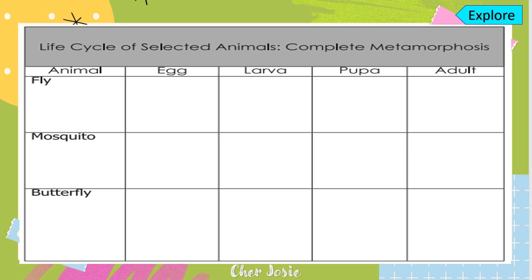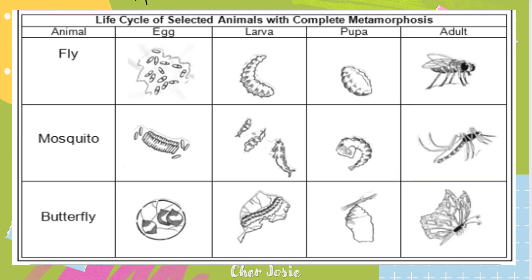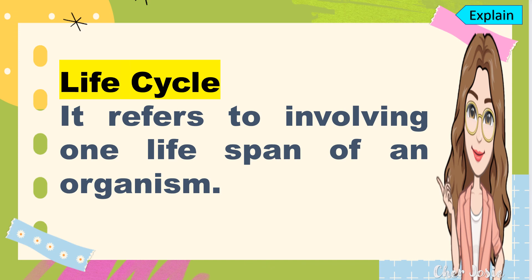This is the example of your activity sheet wherein you're going to paste your cutout pictures. I'll give you enough time to do it. Now it's time for you to present your output and check your answers — if you pasted the correct cutouts in the proper column. Based on your task, you already saw the different life cycles of butterfly, mosquito, and fly.